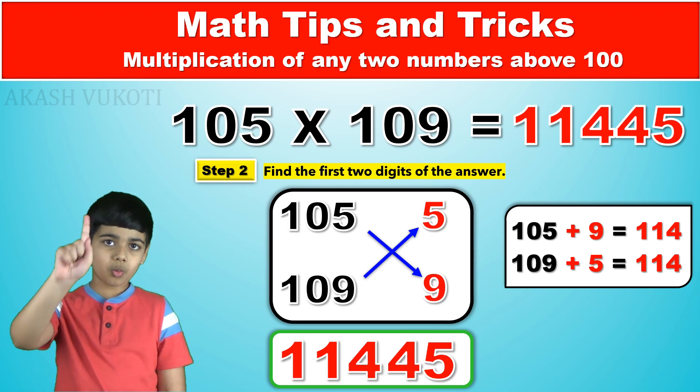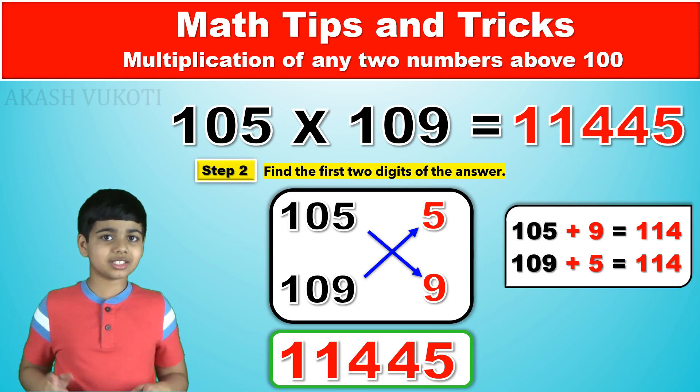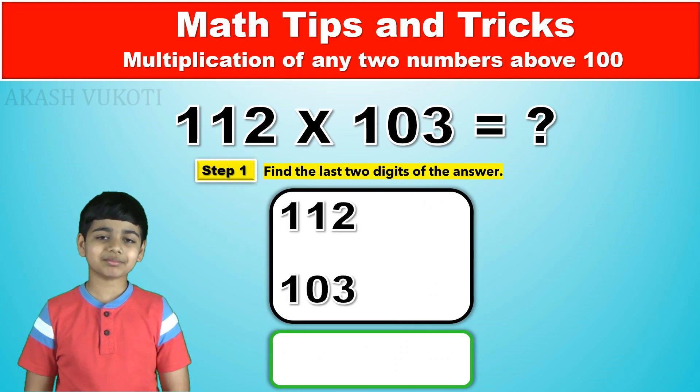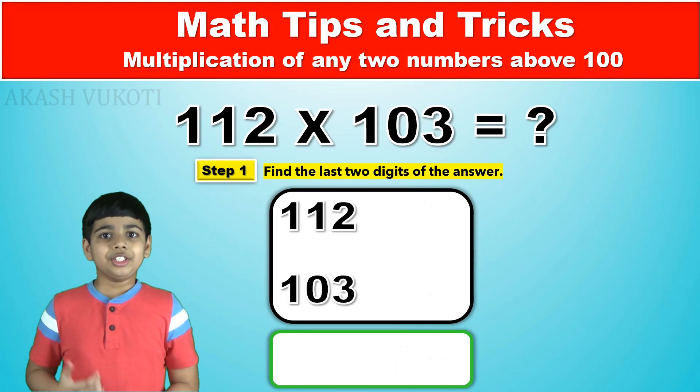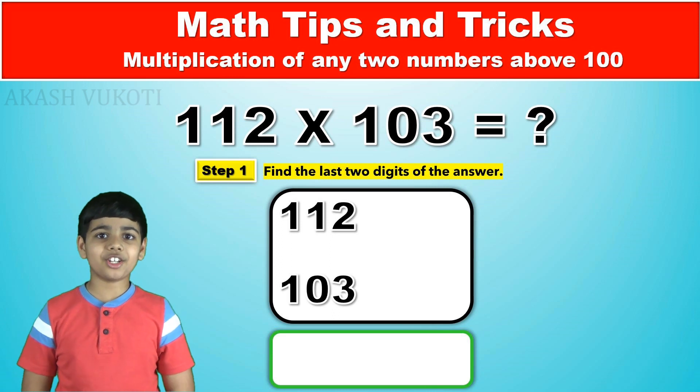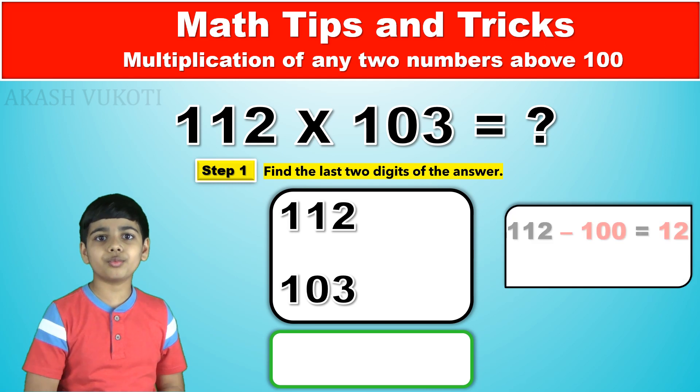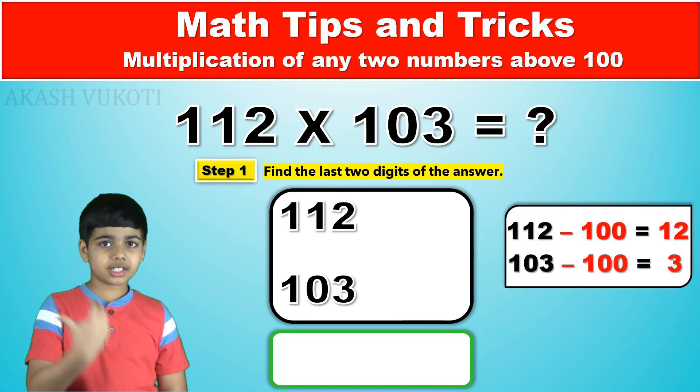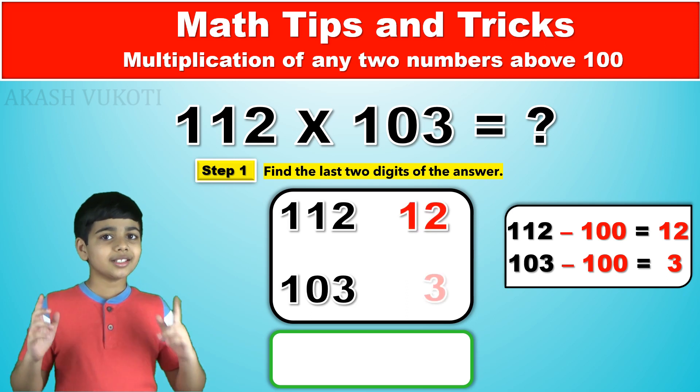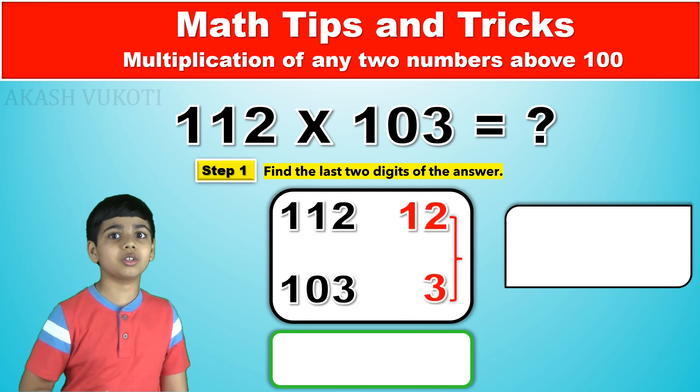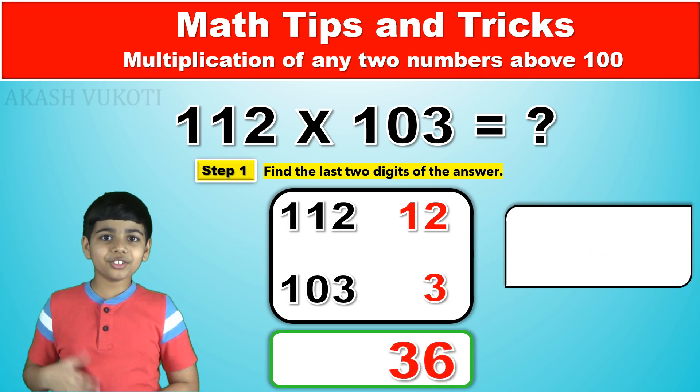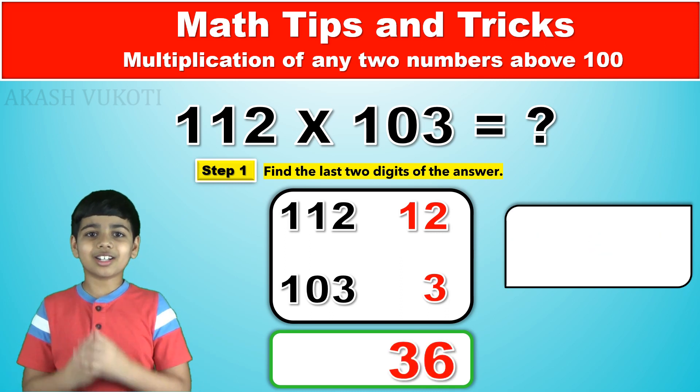And this means that 105 times 109 is 11,445. Let's do one final one. Say, 112 times 103. We take the difference between each number and 100. So 112 minus 100 is 12, while 103 minus 100 is 3. Next, we multiply both 12 and 3, getting 36.